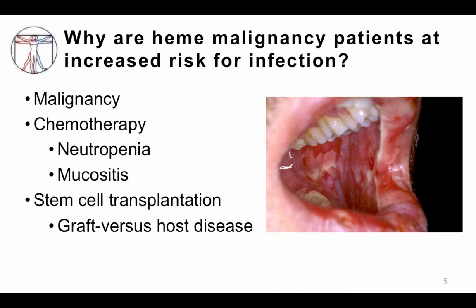In patients who have undergone a stem cell transplant, they also get chemotherapy, can be neutropenic, and have mucositis. But following the stem cell transplant, there is a disease called graft-versus-host disease, where the donor's cells can attack the recipient's body. To prevent that from being severe, patients are put on further immunosuppressive therapy that depletes T cells or inhibits T cell function, and those can also predispose them to infection. Much like mucositis can open up normal intact barriers, so can central venous catheters, allowing bacteria and sometimes Candida in through the skin and into the blood.